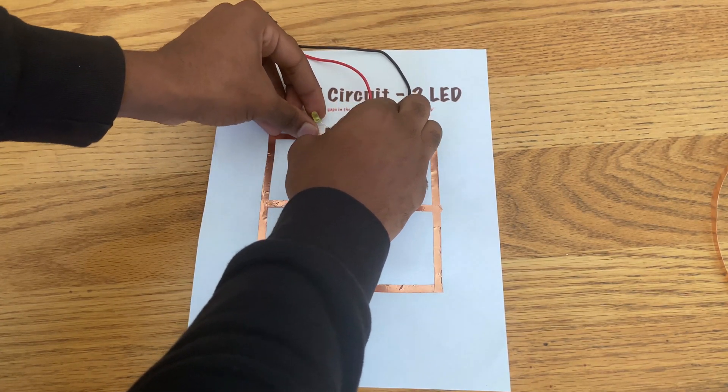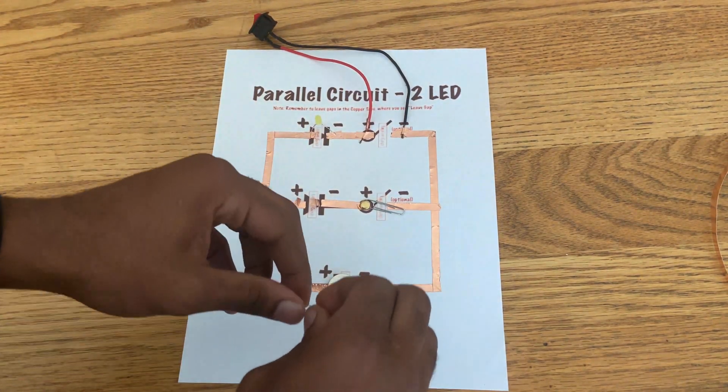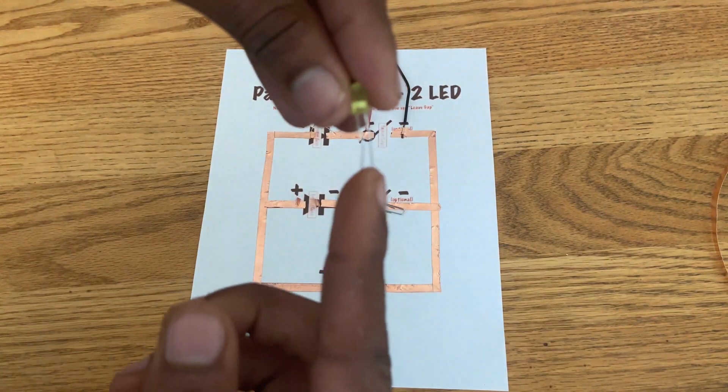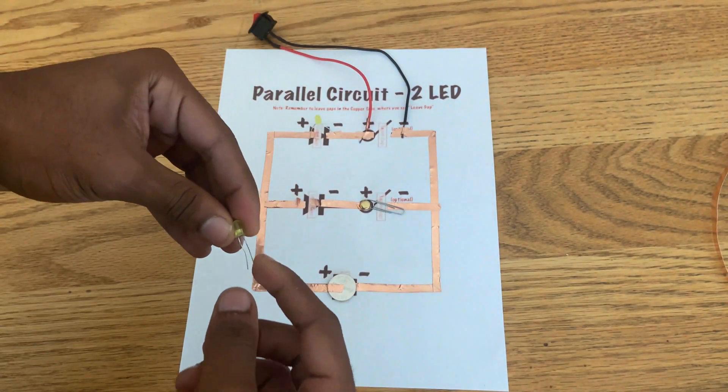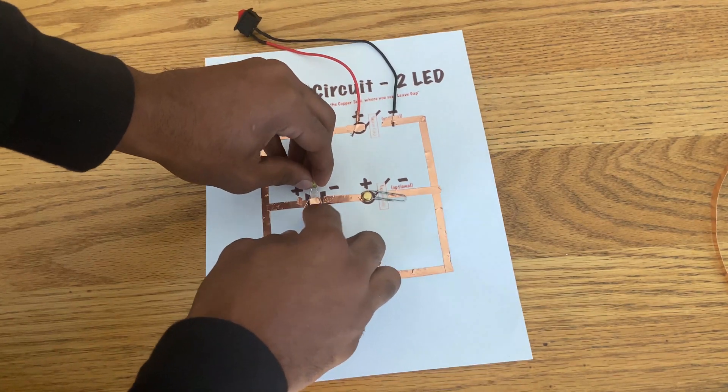I'll connect this leg to the tape that is on top of the battery, the positive side. Then I'll connect the negative leg of the LED to the copper tape that is connected to the negative side of the battery.